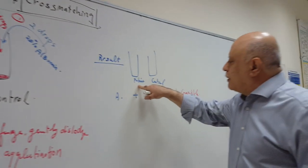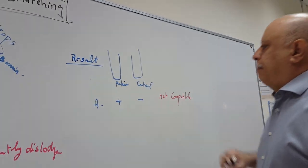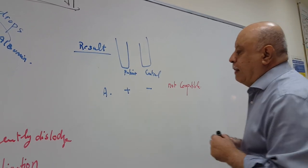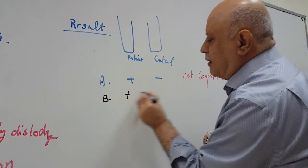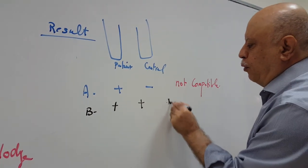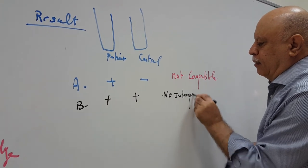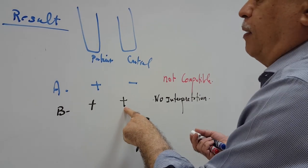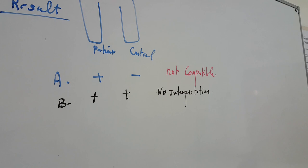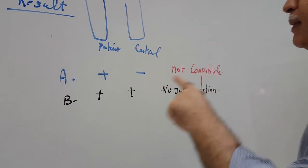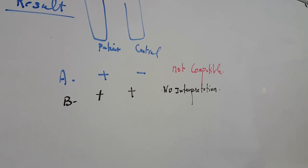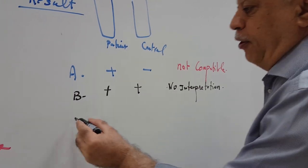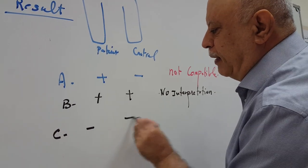If the cross-match is positive, we must find another donor that gives a negative cross-match. Result B: both patient and control are positive — no interpretation is possible. Most likely the patient's RBCs are already coated with agglutinins or a large amount of protein. Result C: both patient and control are negative.